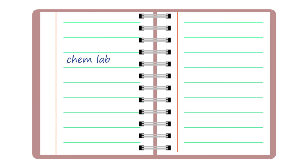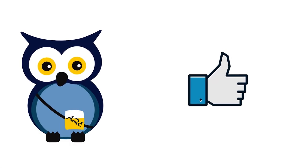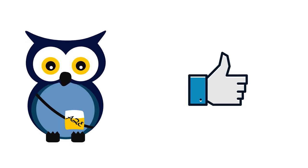Examples of university student clipping: 'chem' for chemistry, 'lab' for laboratory, 'phys ed' for physical education, 'poly sci' for political science, 'con ed' for continuing education, and 'psych' for psychology. These are some examples — if you can think of others, let me know. Thanks for your time and attention, and see you again soon.